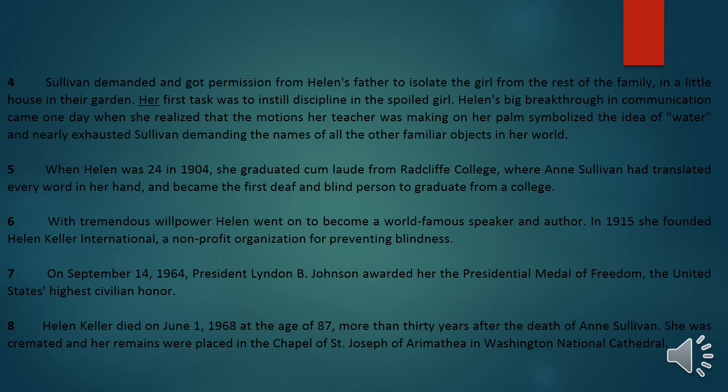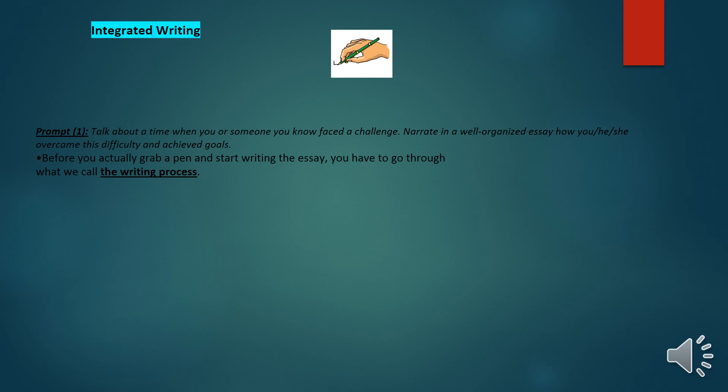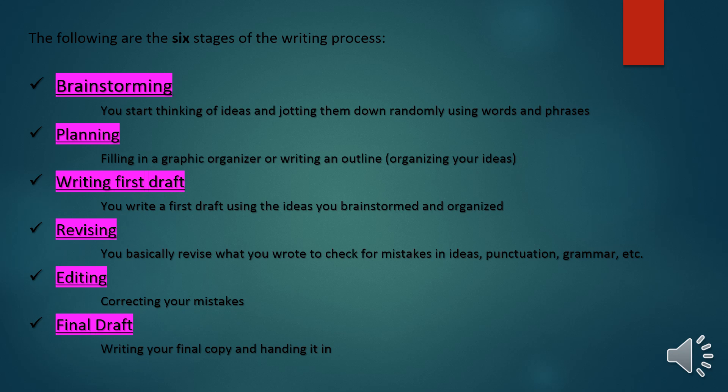The text also discusses her achievements throughout her life, with real facts, dates, and information. Now moving to the comprehension questions: Question 1 asks how Helen got her disability — she got it from a high fever. Question 2 asks how Anne Sullivan changed Helen's life — Anne instilled discipline in Helen, who was a spoiled child, and taught her to communicate through signs.